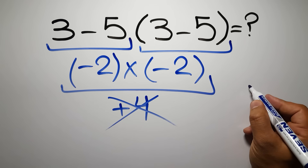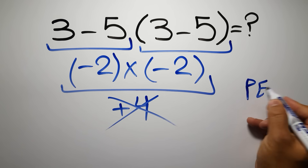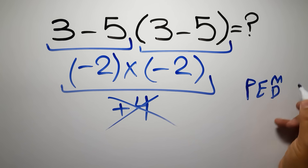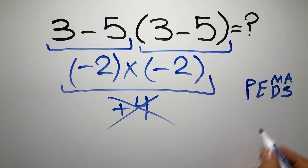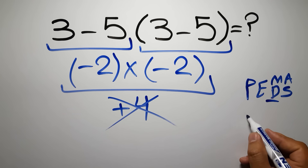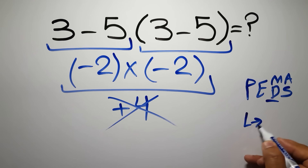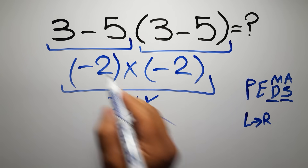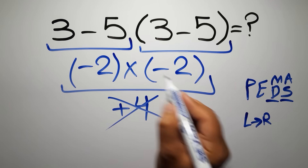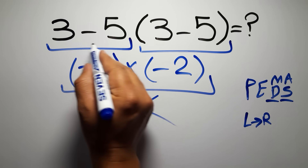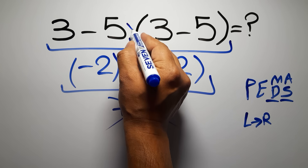According to the rule of operations, first we have to do parentheses, then exponents, then multiplication or division, and finally addition or subtraction. Remember that multiplication and division have equal priority and we work from left to right, and the same applies to addition and subtraction.